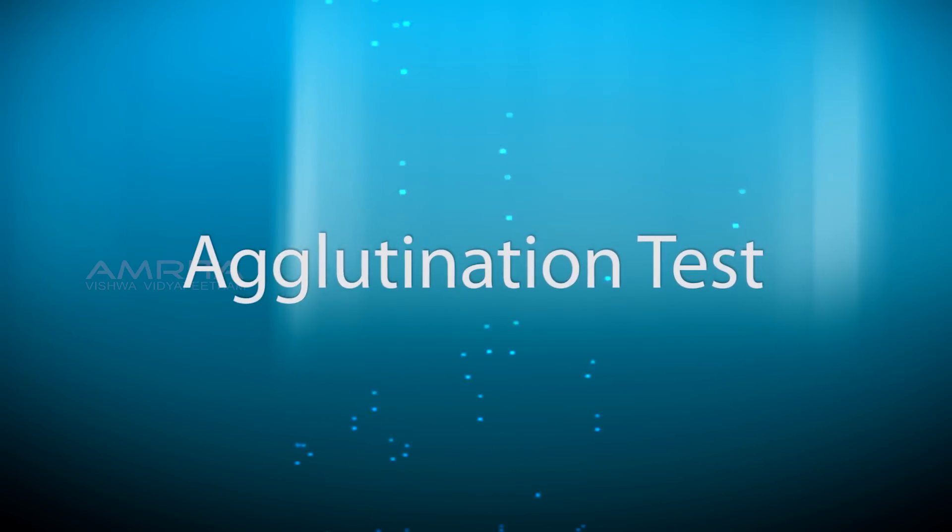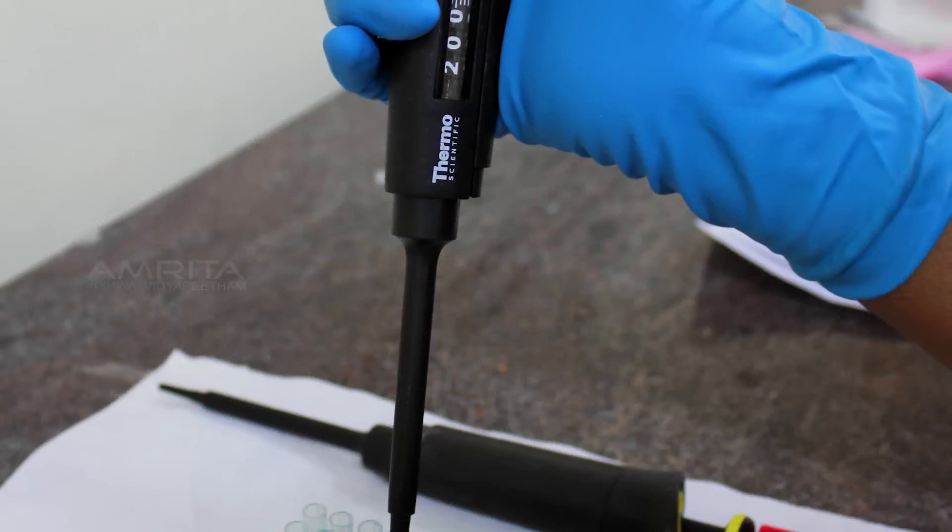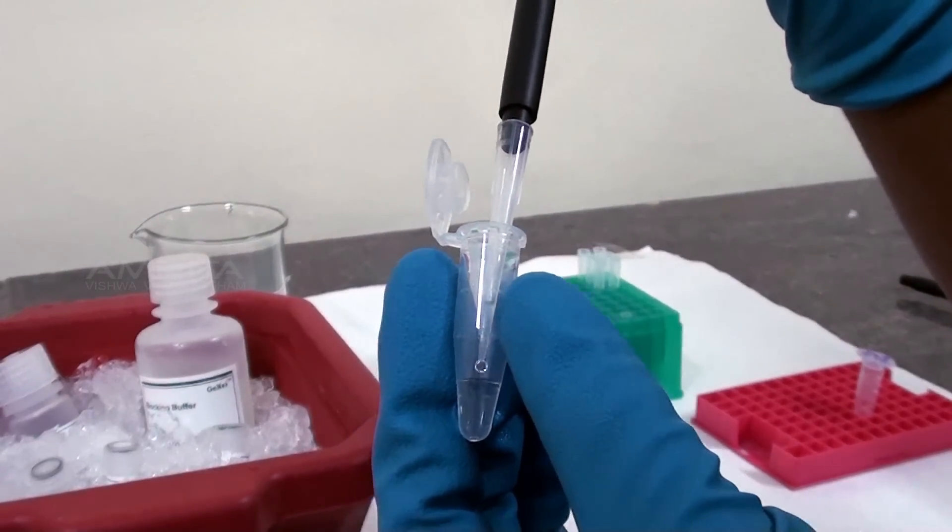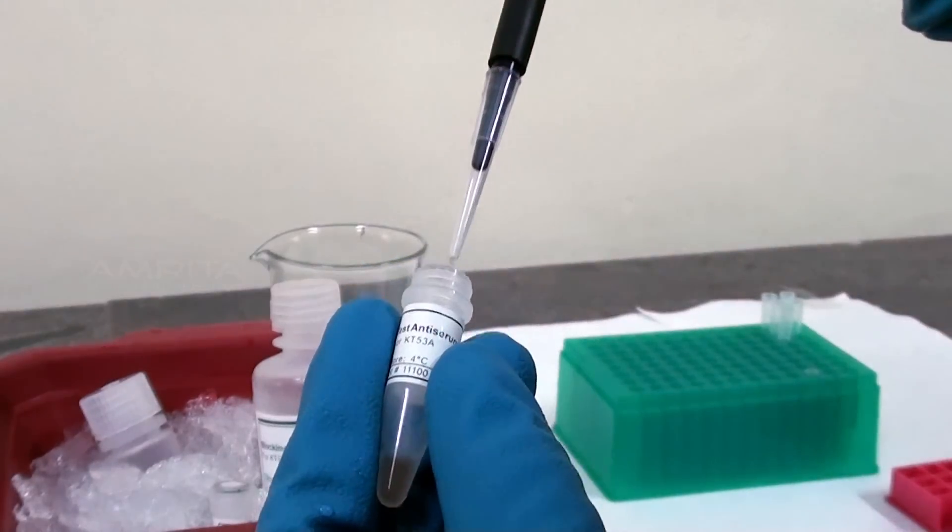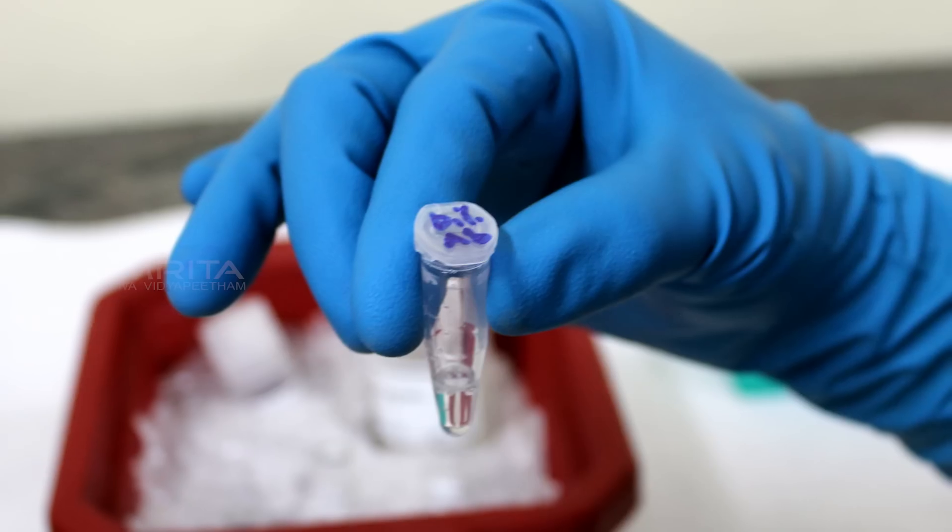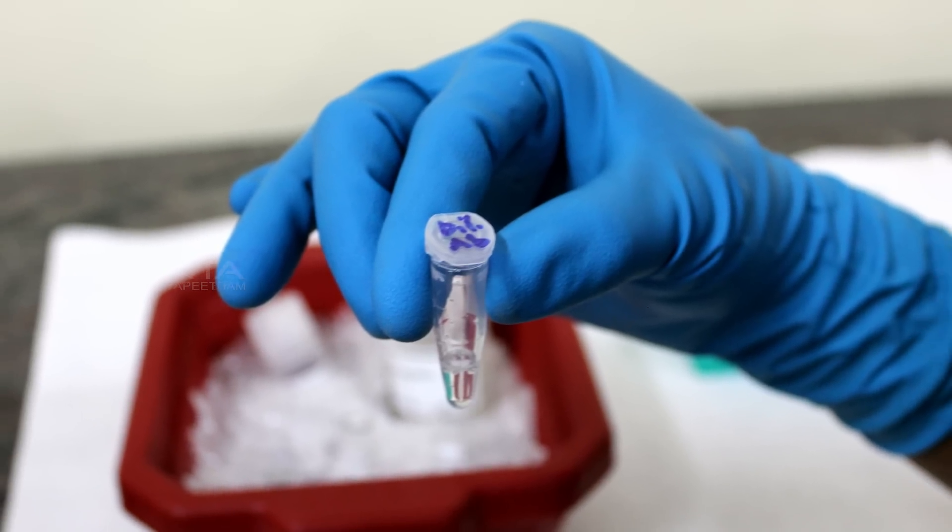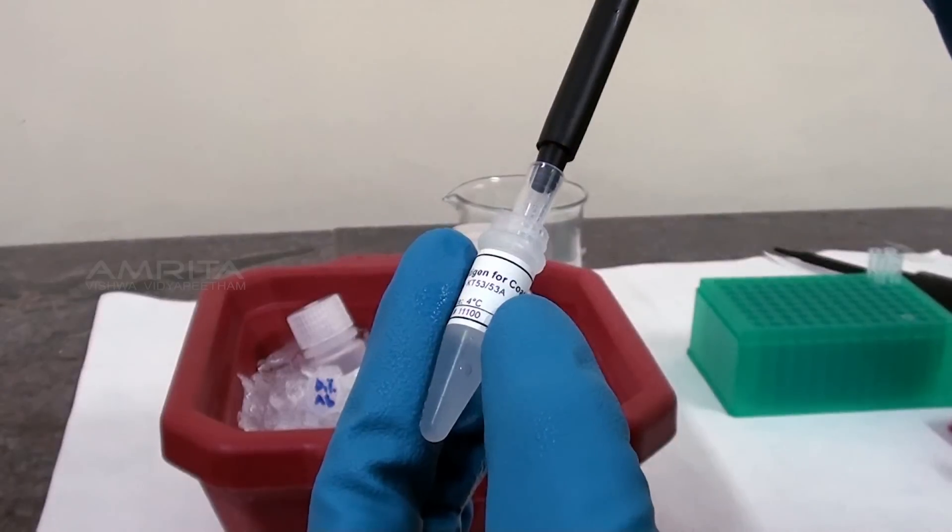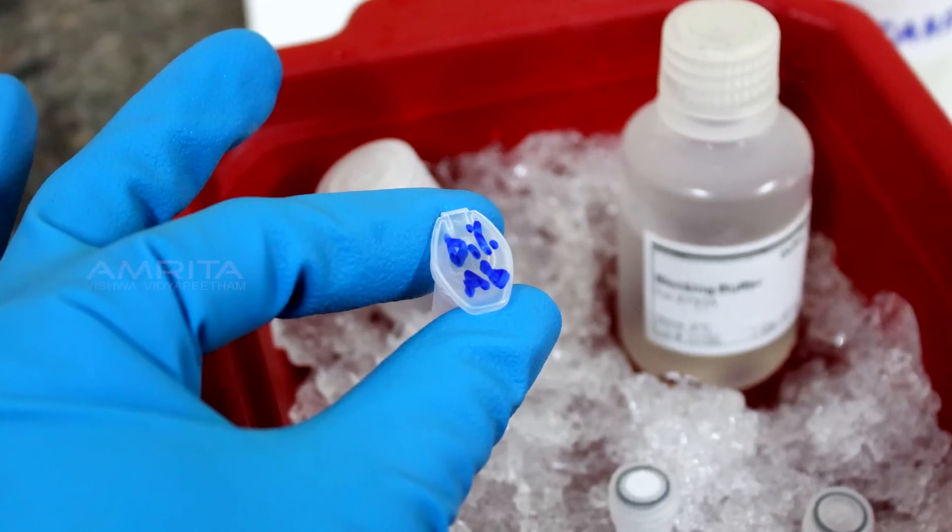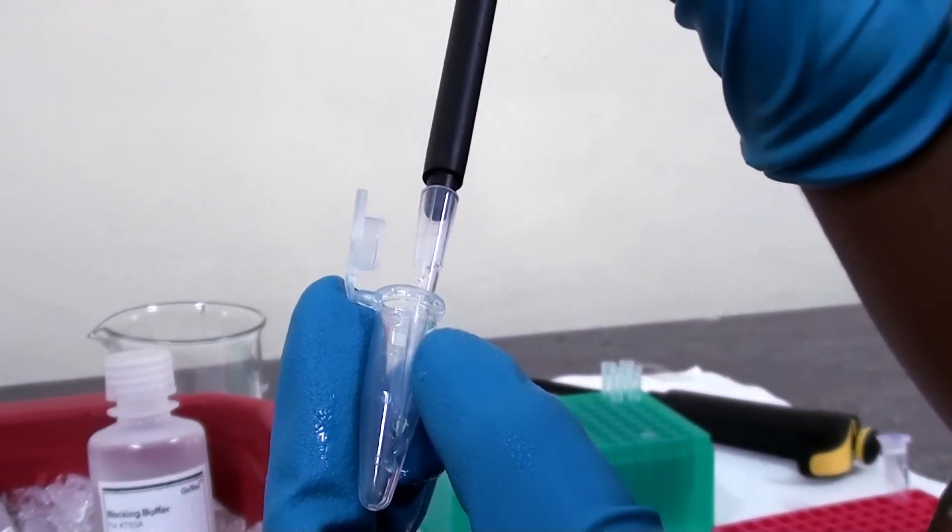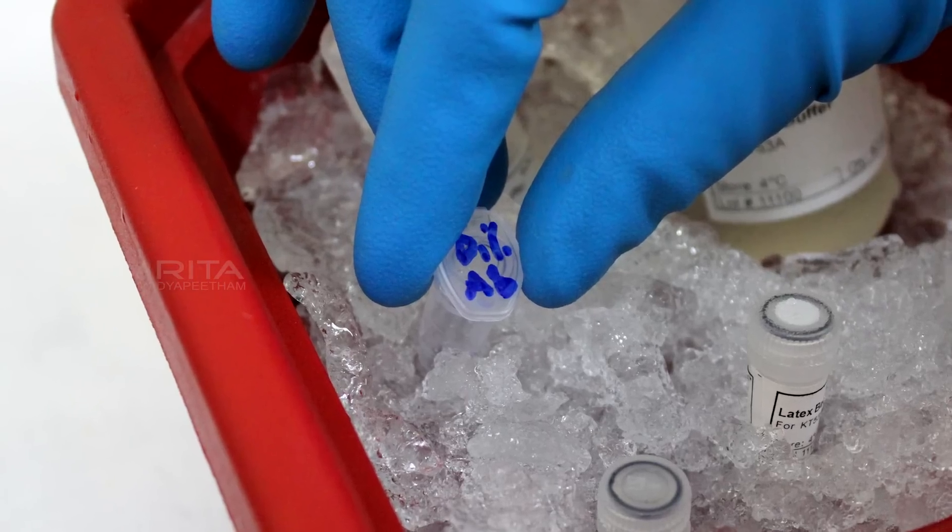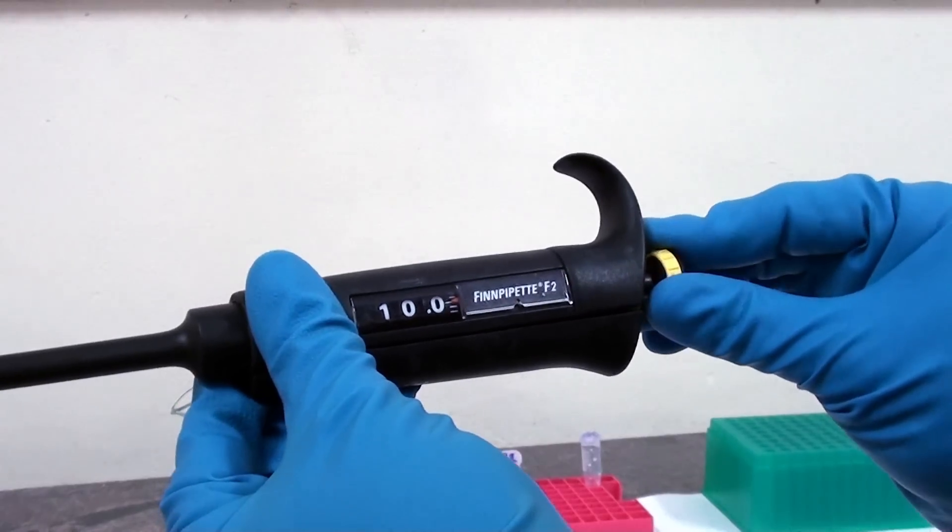Agglutination test: To 200 microliters of glycine saline buffer taken in a vial, add 4 microliters of test antiserum (50 times diluted). Add 50 microliters of antigen to 50 microliters of diluted antiserum in a 1.5 ml vial. Mix well and incubate at room temperature for 10 minutes.